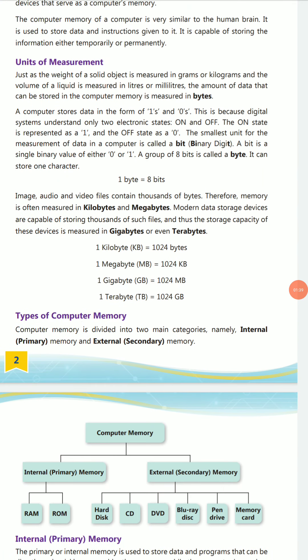A group of eight bits is called a byte. One byte can store one character. As you can see clearly, one byte is equal to eight bits. In the form of images, audio, and video, content can contain thousands of bytes.